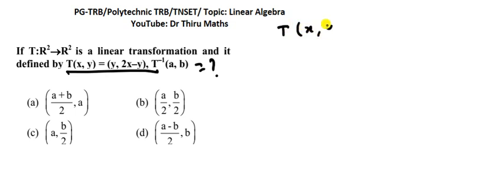Well given that T of (x,y) equal to (y, 2x minus y). What they are asking? They are asking T inverse of (a,b).